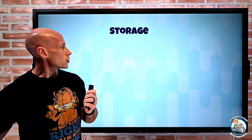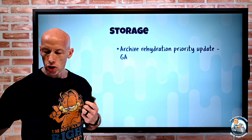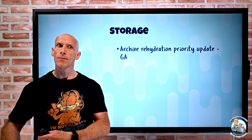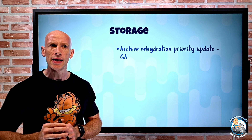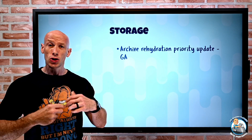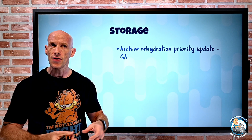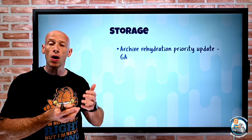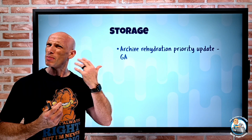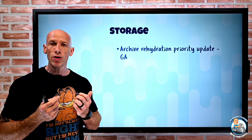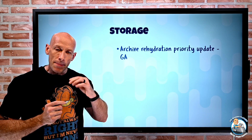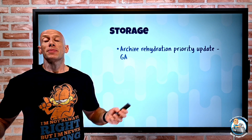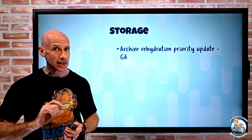On the storage side, archive rehydration priority update has gone GA. Storage has a hot tier, cool tier, and archive tier — the archive tier is actually offline, great for keeping data long-term at minimum cost when you don't need immediate access. If you do need to access it, you have to rehydrate it into cool or hot, which takes time. When rehydrating, you can do standard or high priority — high priority is typically sub-hour. What's new is if you submitted a standard rehydration and it's still in a pending state, you can now change it to high priority.